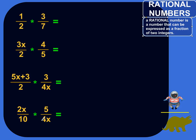All right, so a rational number is a number that can be expressed as a fraction of two integers and comes from ratio. You know, ratio is just a comparison of two numbers. So this would be a rational number.